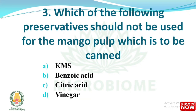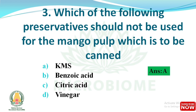Next question: which of the following preservatives should not be used for mango pulp that is to be canned? The options are KMS, benzoic acid, citric acid, and vinegar. The right answer is option A: KMS.